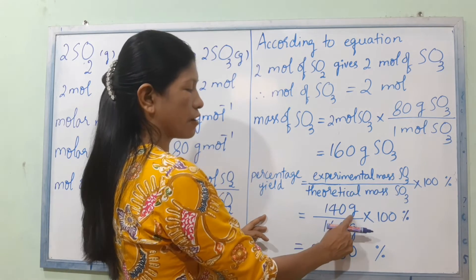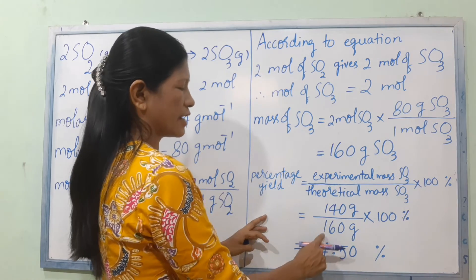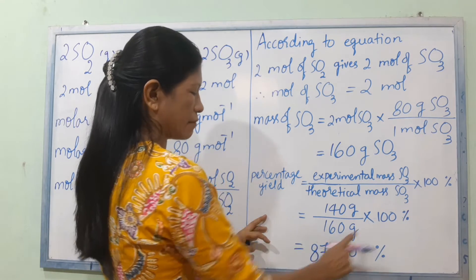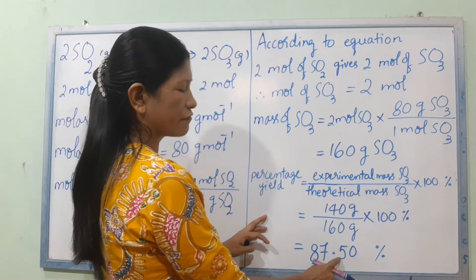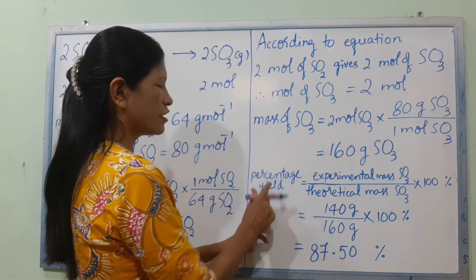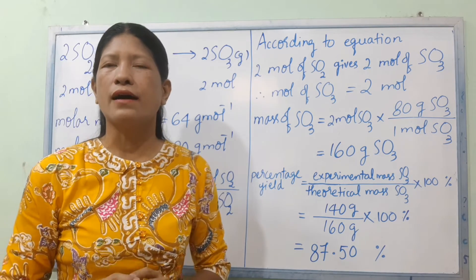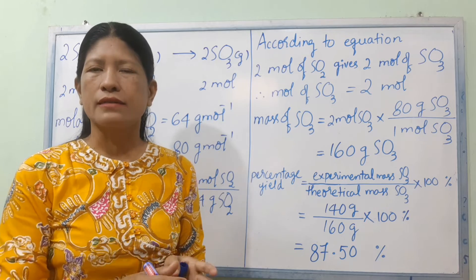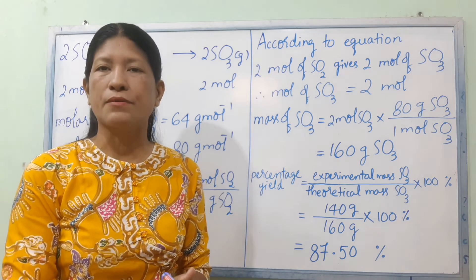The theoretical yield is 160 grams and the experimental yield is 140 grams. The percentage yield equals experimental mass divided by theoretical mass, multiplied by 100%, giving a percentage yield of 87.5%.